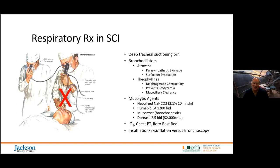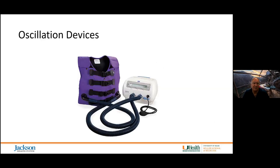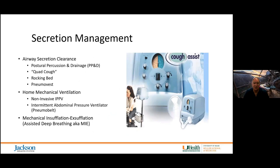Insufflation-exsufflation is preferred to bronchoscopy — it is a preventive measure. We know that folks with high spinal cord injury, as well as even those with paraplegia, develop significant parasympathetic dominance and airway hyperreactivity. There have been many studies recognizing the need for bronchodilators and agents to reduce the hyperreactivity of the upper airways. Managing by opening up the bronchioles with duonebs moistens secretions; we can then shake those secretions loose with oscillation devices or postural percussion and drainage; and then it's very important to clear them with mechanical insufflation-exsufflation.